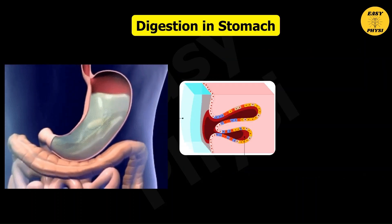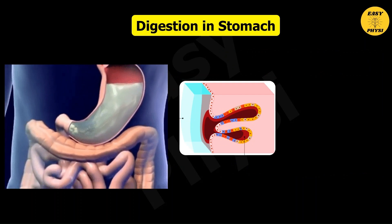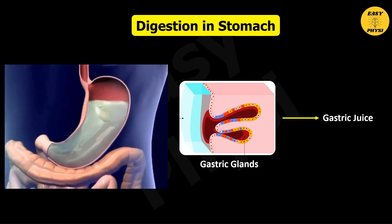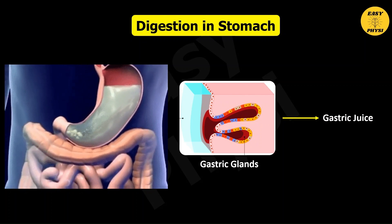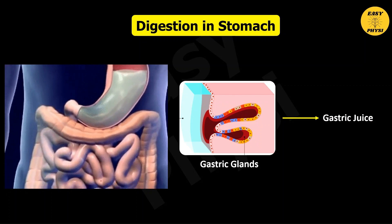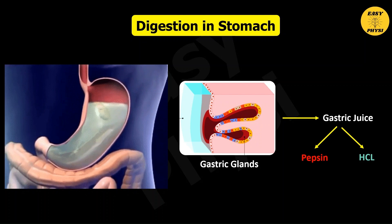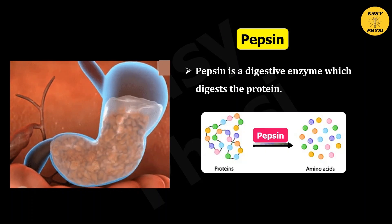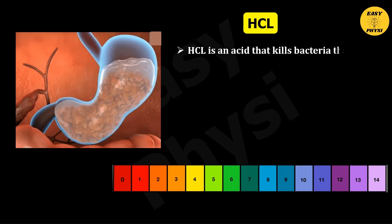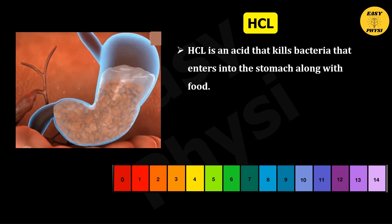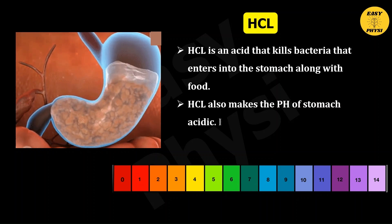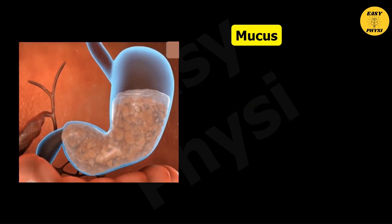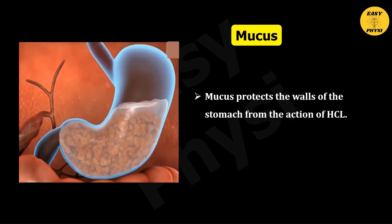Digestion in the stomach: The stomach is a hollow muscular organ with gastric glands present in its walls. They produce gastric juice, which has different compounds that help in digestion. The components of gastric juice include: Pepsin, a digestive enzyme which digests protein; HCl, an acid that kills bacteria that enter the stomach along with food and makes the stomach's pH acidic because proteins need an acidic medium for digestion; and Mucus, which protects the walls of the stomach from the action of hydrochloric acid.